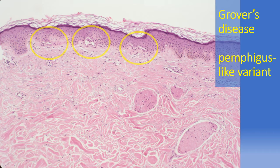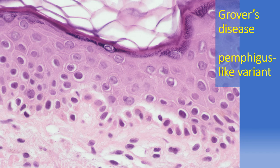One additional example of relatively subtle and focal changes of suprabasilar acantholysis consistent with the pemphigus-like variant of Grover's disease.